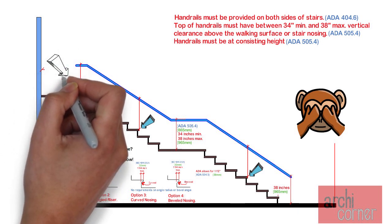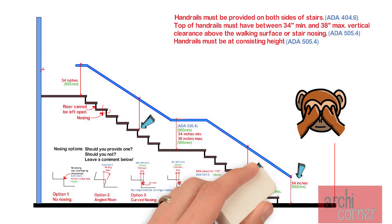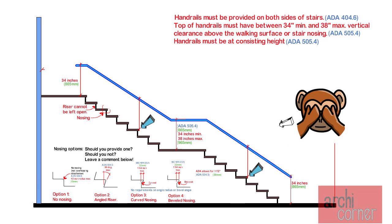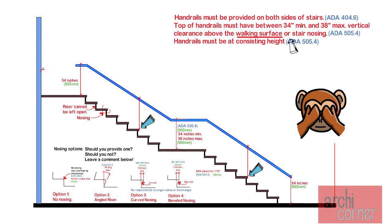This means that once you select the height, whether it is 34 inches, 38 inches, or something in between, that height must be consistent throughout the run of the flight of stairs. You may have noticed that that code at the beginning said that this vertical clearance was measured either above the walking surface or the stair nosing. When measuring the handrail height to the walking surface, that applies to extensions, which we will talk about next.